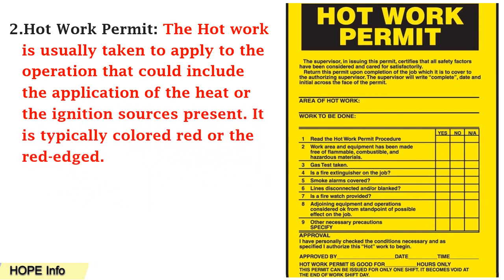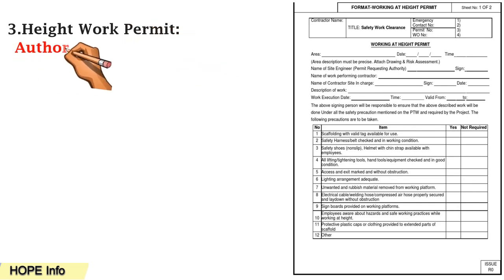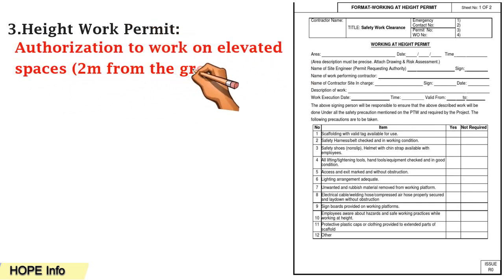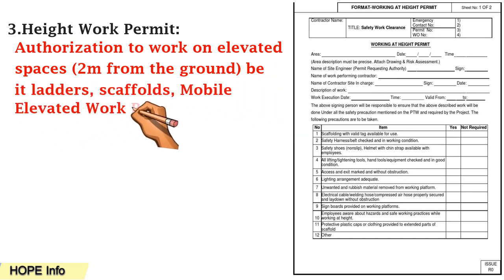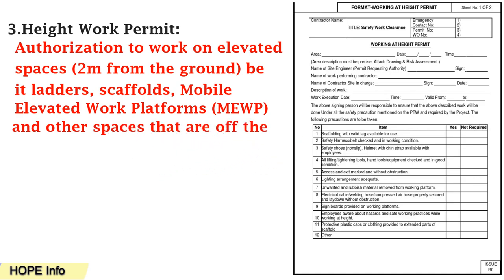Number three is the heights work permit, also called working at height permit. This type of permit authorizes work on elevated spaces two meters or more from the ground, using ladders, scaffolding, mobile elevated working platforms (MEWP), and other structures that are off the ground.